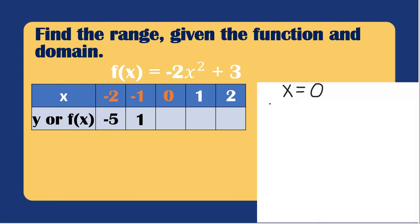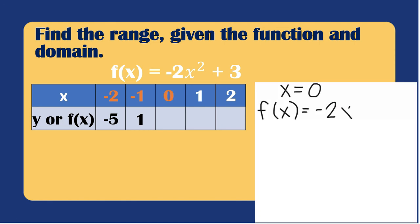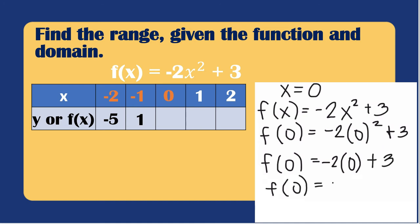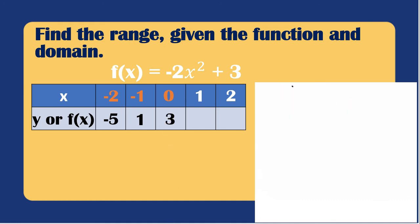If x = 0: f(0) = -2(0)² + 3. Since 0² = 0 and -2 × 0 = 0, f(0) = 0 + 3 = 3. So if x = 0, the value of f(x) is 3.